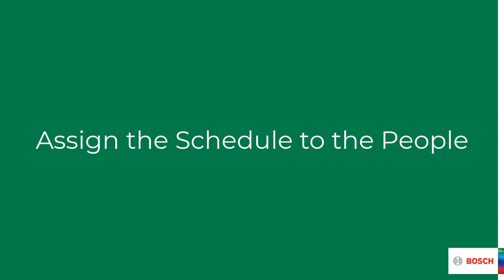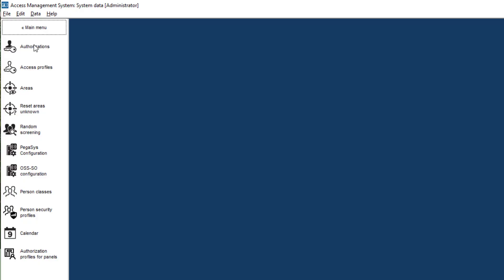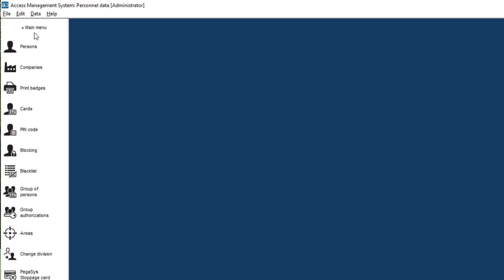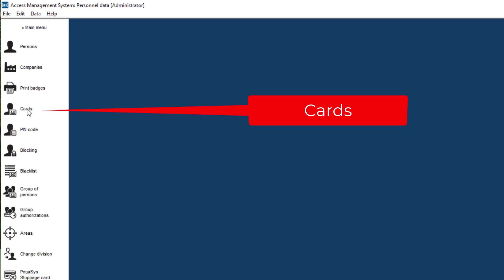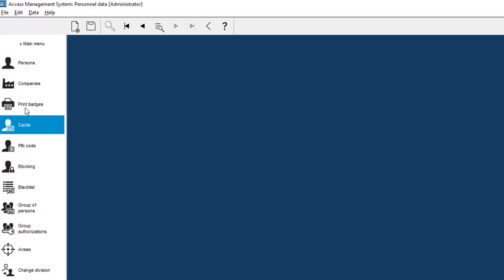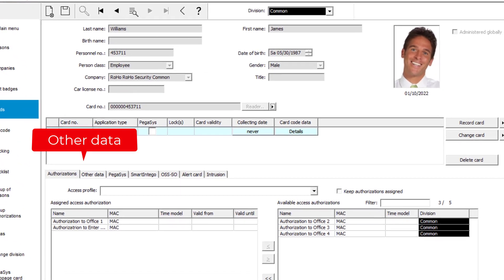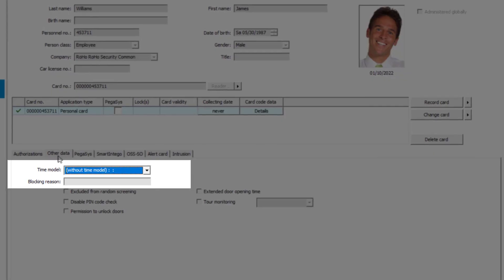Now we have to decide where to set the schedule — it can be assigned to a door or a reader, but we have decided to assign the schedule to the personnel. Let's find our employees in the cards menu. There is James Williams — his access will be limited to office hours.